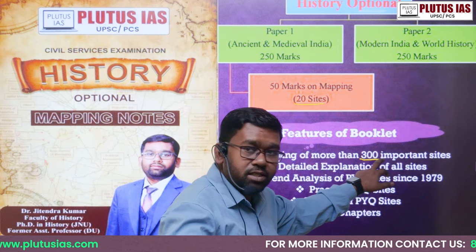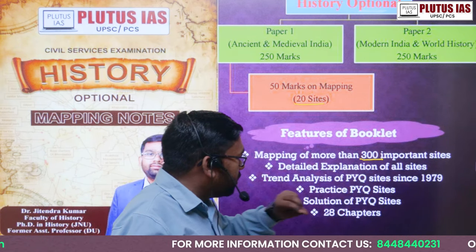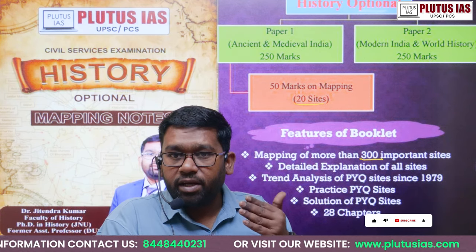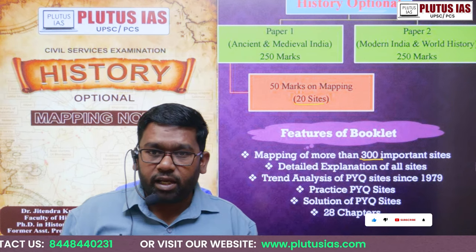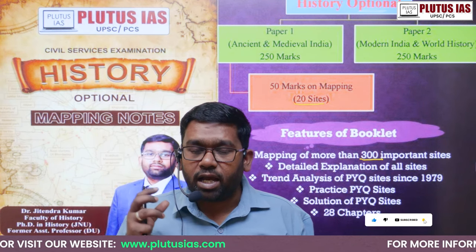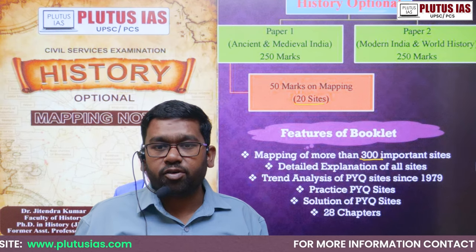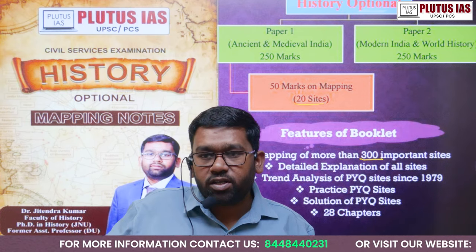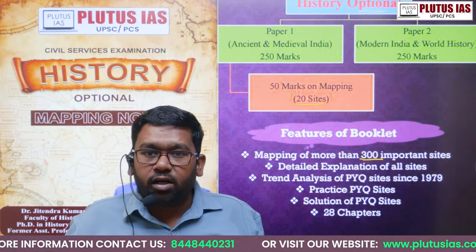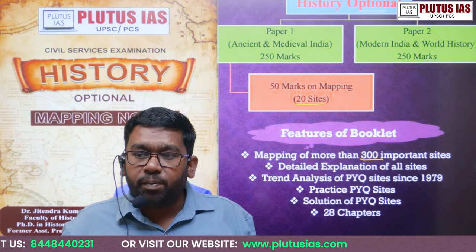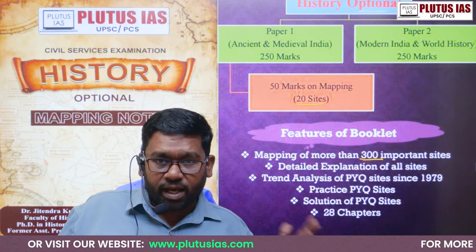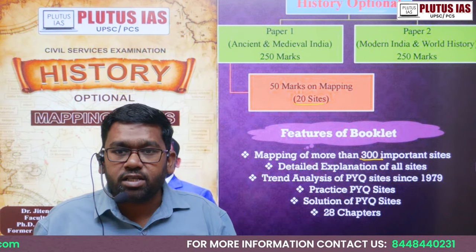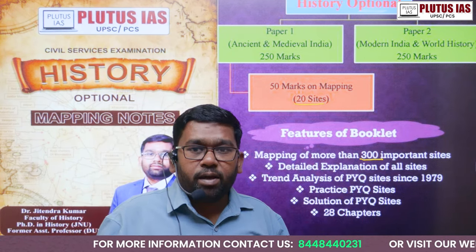So in this booklet, we have included more than 300 important sites based on PYQs taken from 1979 onwards. From 1979 to 2023, whatever sites have been included in the history optional mapping examination, we have included all of them. There are more than 50 sites which have been repeatedly asked more than five to six times, and through trend analysis you can identify which sites are the most important.